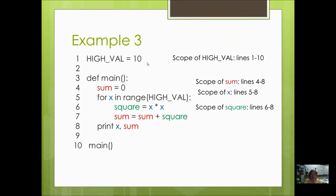For example 3, we've got another global constant, HIGH_VAL. We've got only one function here, main. So what is the scope of HIGH_VAL? It's the entire program, so lines 1 to 10. Here we've got a local variable sum. What's its scope? From where it's declared to the end of the function, so lines 4 to 8. X is also a local variable for this particular function. It's also a local variable for this loop, but it is accessible from this point forward. So the scope of x is lines 5 through 8. Square starts at line 6, so its scope is 6 through 8.